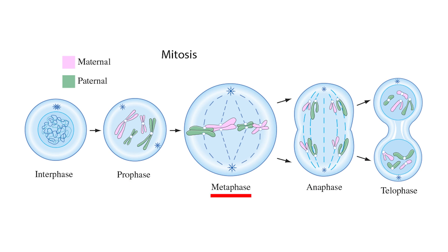Metaphase: in this stage, chromosomes line up along the metaphase plate, the cell's equatorial plane. Spindle fibers attach to the centromere of each chromosome.